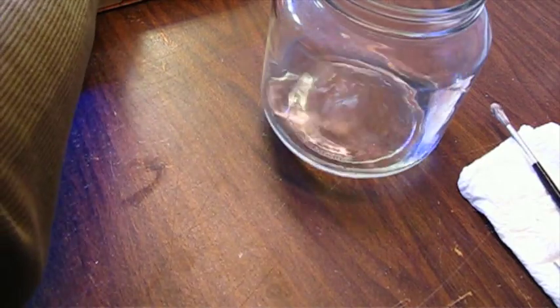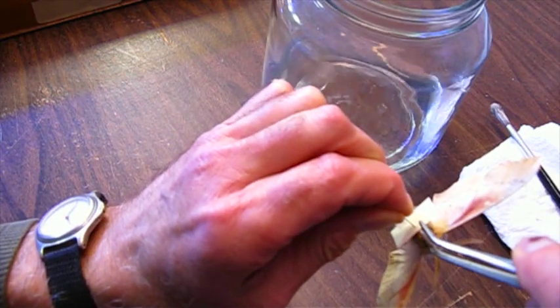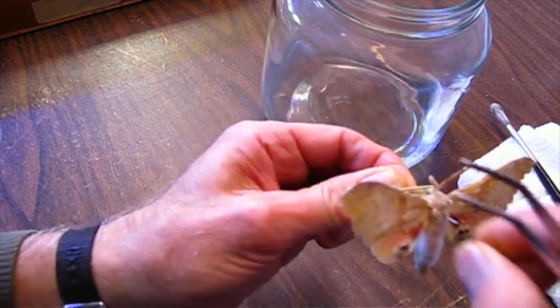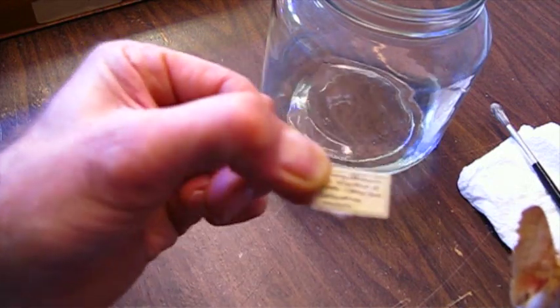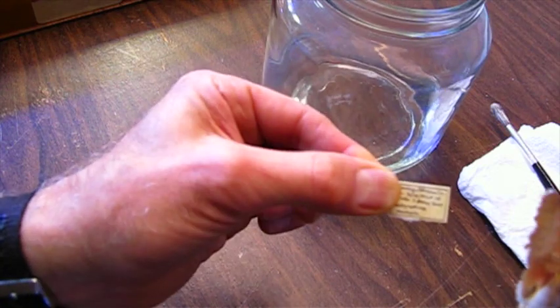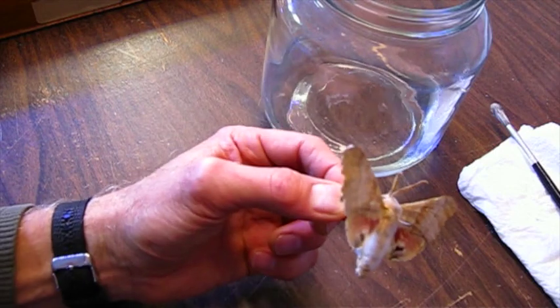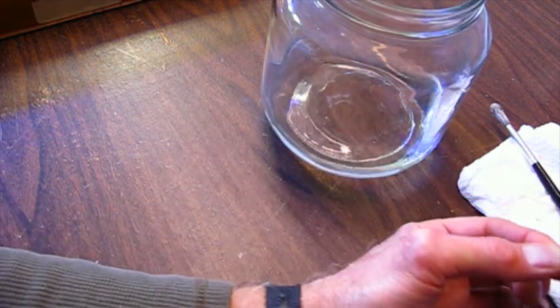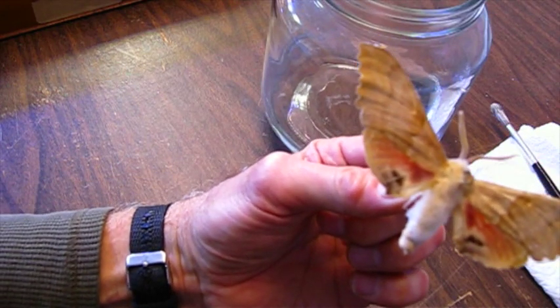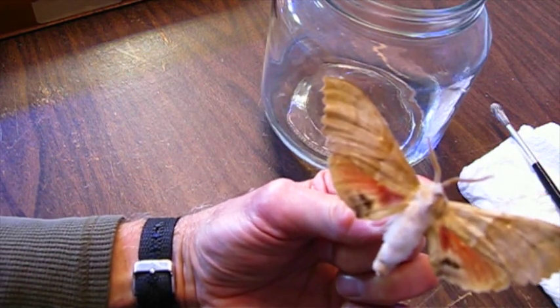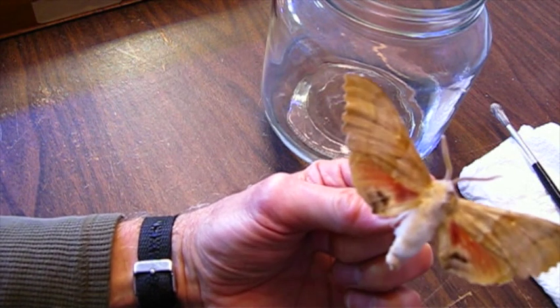First thing to do is I'll remove the label, the data label from the specimen. You can see even the data label has some mold on it, it's kind of discolored, so I'm going to replace it and make a new label. This is a specimen of Pachysphinx modesta, a sphingid moth, collected in Gillette, Wyoming, 2001.